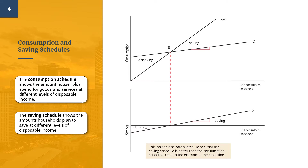At very low levels of disposable income, or to the left of E, households tend to spend more than they earn during the year — this is called dissaving, and it is usually financed by borrowing or using up their wealth. Beyond the break-even income, or to the right of E, households earn more than they wish to spend, so they are able to save.